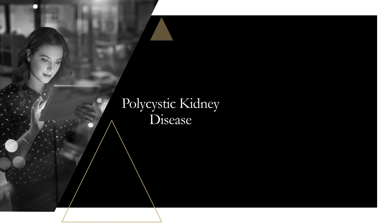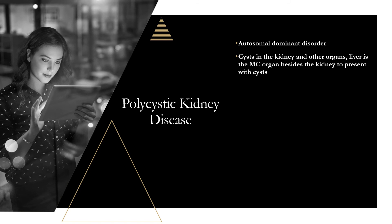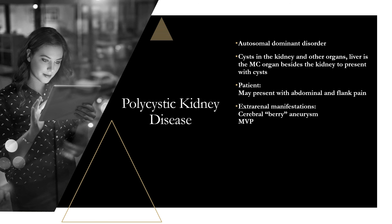Polycystic kidney disease (PKD) is autosomal dominant. Cysts appear in the kidneys, and the next most common organ affected is the liver. Patients may present with abdominal and flank pain. As for extra-renal manifestations, PKD is associated with cerebral berry aneurysms and mitral valve prolapse — these are high-yield associations that frequently appear on exams.